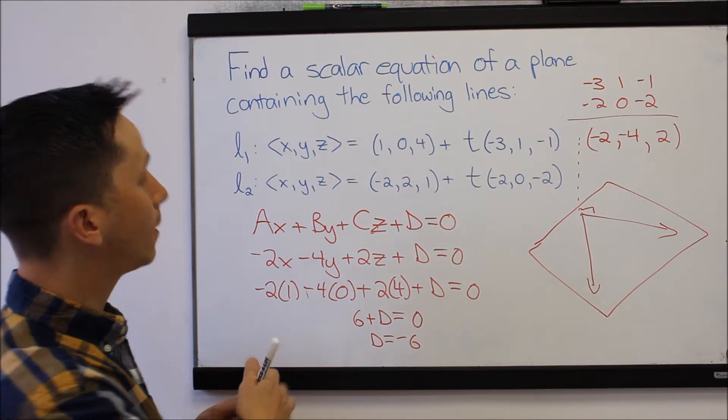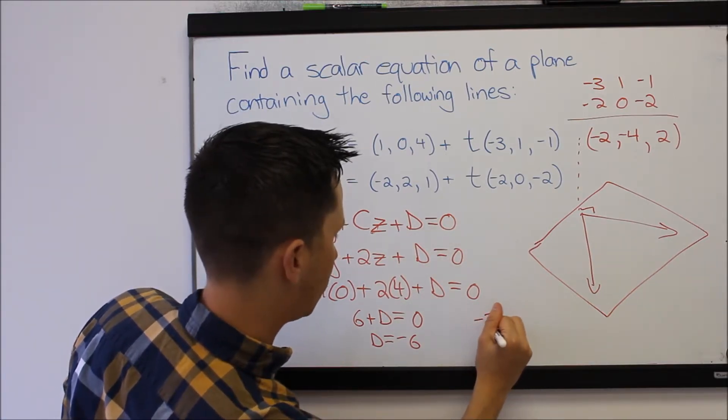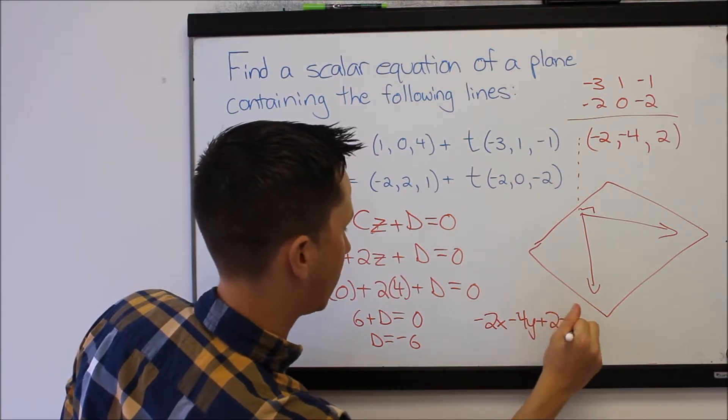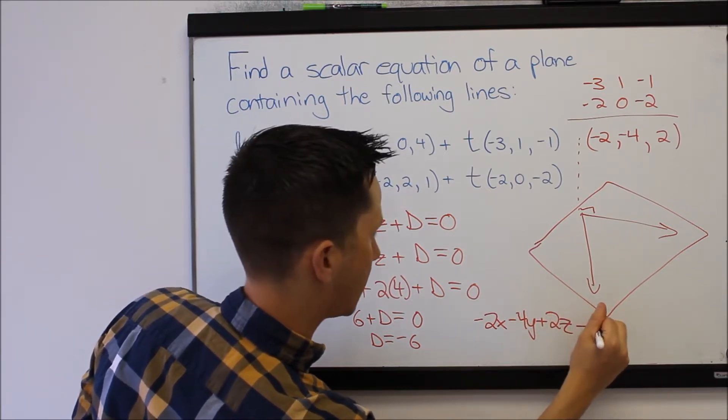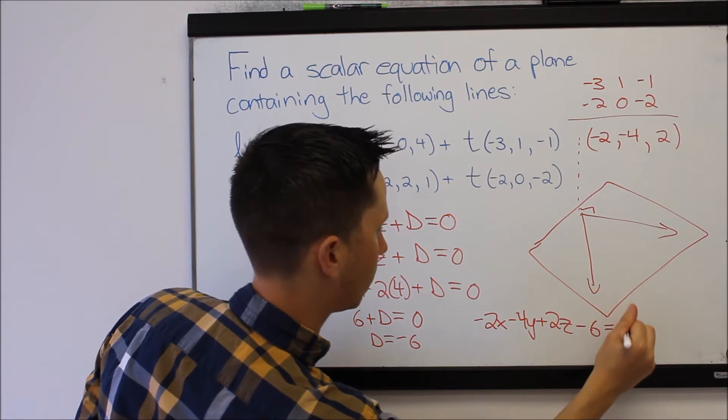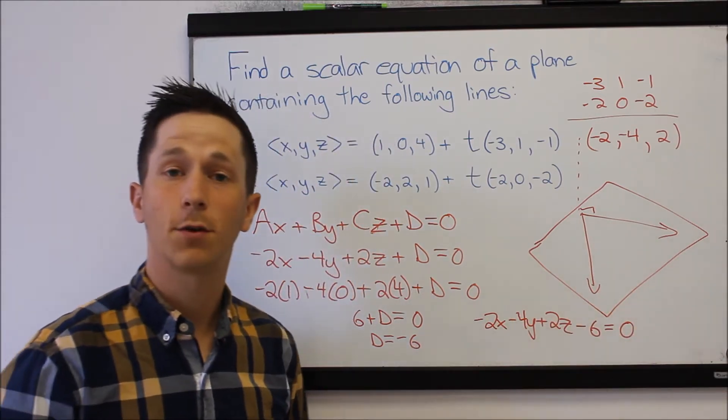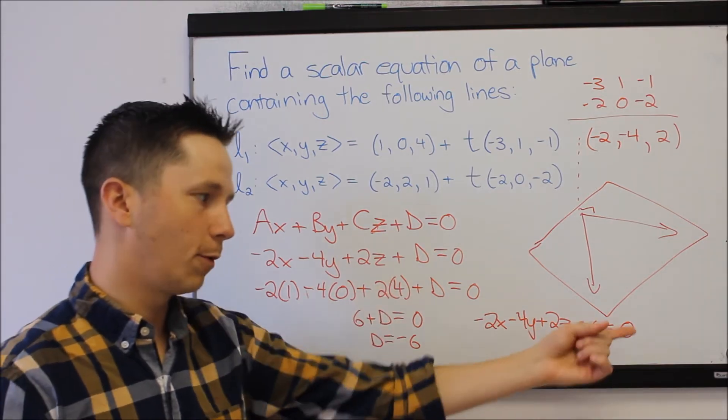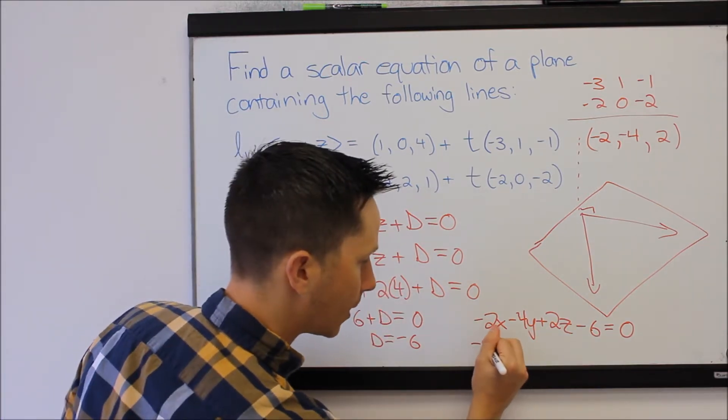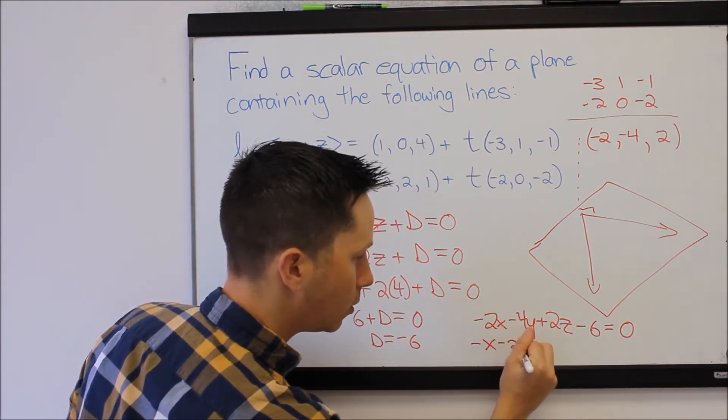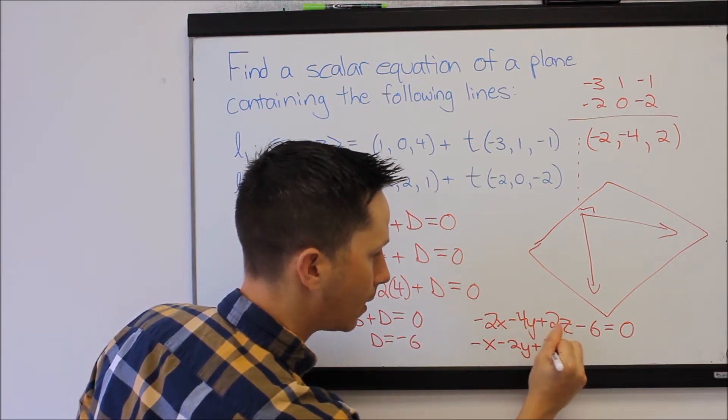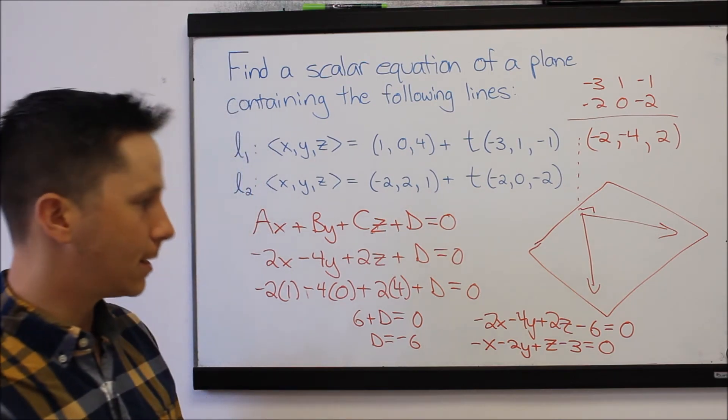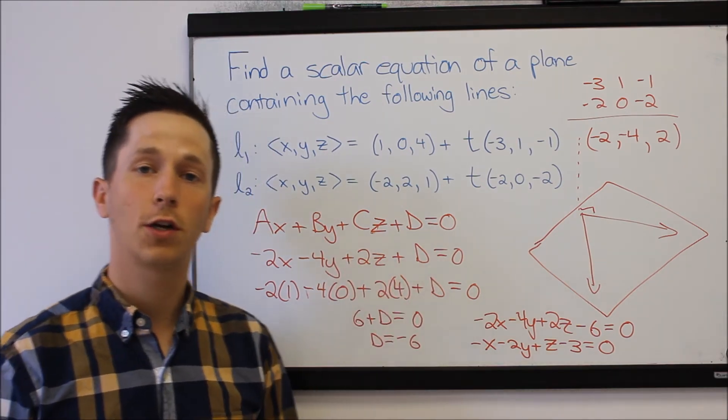And our final equation is negative 2x minus 4y plus 2z minus 6 equals 0. Of course, we could divide this whole thing by 2 because we've got 0 on the other side. So I can make this negative x minus 2y plus z minus 3 equals 0. And that is the equation, the scalar equation, of our plane.